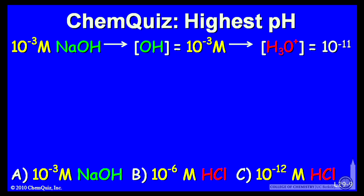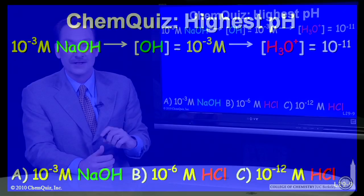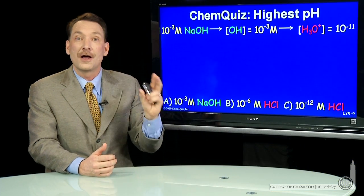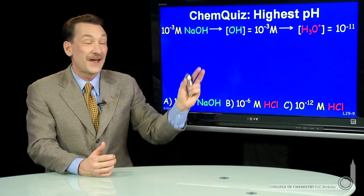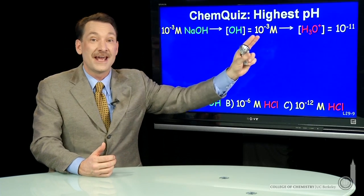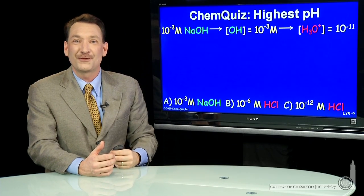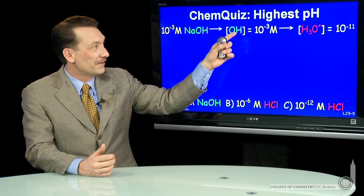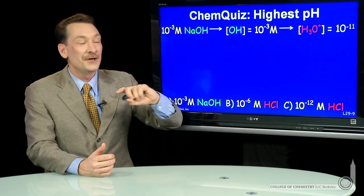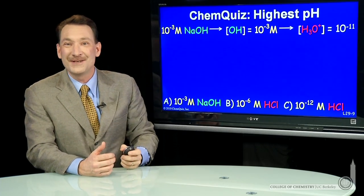So if you have an OH minus concentration of 10 to the minus 3, you immediately know the H3O plus concentration because these two are locked together by the fact that OH minus and H3O plus concentrations product is always 10 to the minus 14 in water. So if OH minus is 10 to the minus 3,